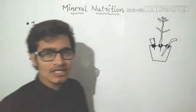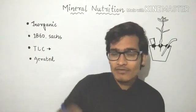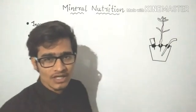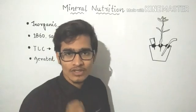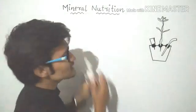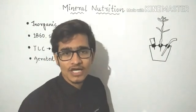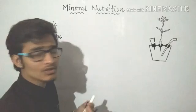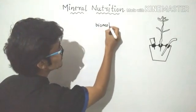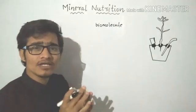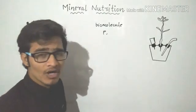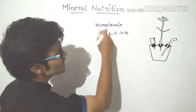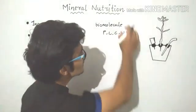Firstly we have to understand the nutritional requirements of all living organisms, whether it is a small unicellular microbe or a multicellular well-developed organism like human beings. Each and every organism has some essential nutritional requirements. There are different kinds of things required by a living organism — it may be organic nutrition or macromolecules. We have already talked about biomolecules: proteins formed of amino acids, lipids, carbohydrates, and nucleic acids. All these biomolecules are organic in nature and are required by all living organisms.